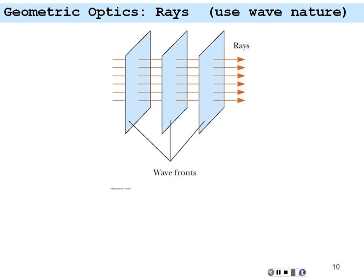This brings us to geometric optics. To understand this, we're going to use the ray approximation. The rays are arrows that show the direction that the light is going. In this approximation we're thinking of light as having wave nature, so it has wave fronts — maxima moving along in a direction — and these wave fronts are separated by wavelengths as they move along in the direction given by the arrow of the ray.